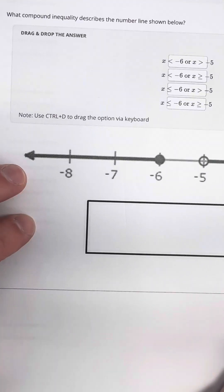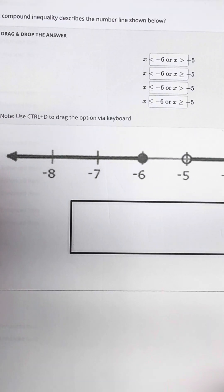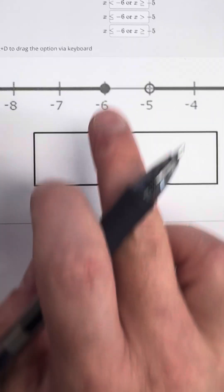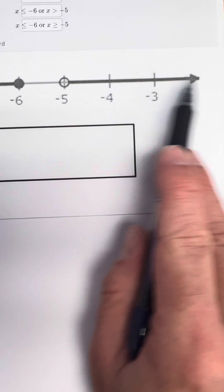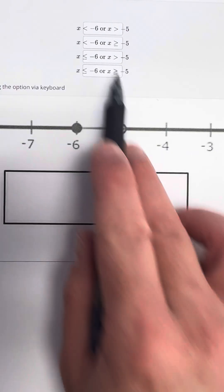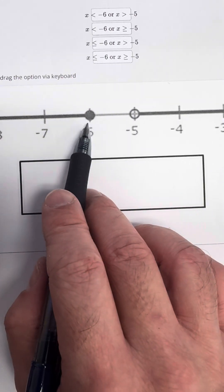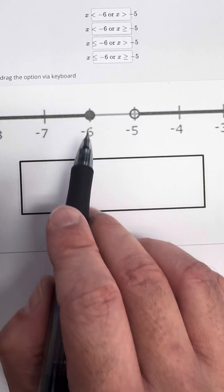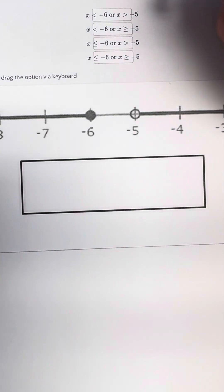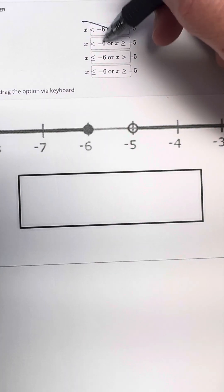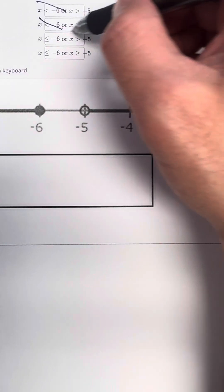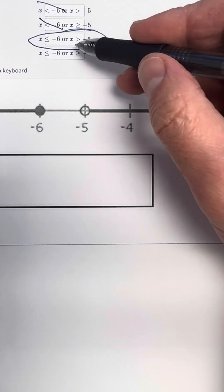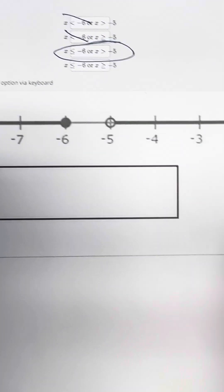Last problem. Compound inequality. Which compound inequality describes this? All right. Well, we know it's an or because I got an arrow pointing that way and then another arrow going that way. So they're all or so that doesn't help. This is negative 6 filled in circle. So it cannot be this choice and it cannot be that choice. So it's one of these two. This is an open circle on the negative 5. So it's going to have to be this middle choice here, right? Because we have open circle and closed circle. See you later.